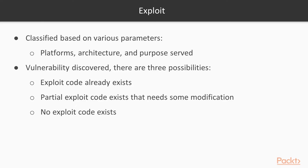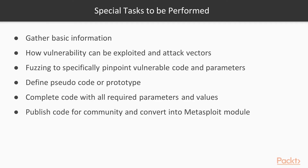Whenever any given vulnerability is discovered, there are either of three possibilities: an exploit code already exists, partial exploit code exists that needs some modification to execute a malicious payload, or no exploit code exists and there is a need to develop new exploit code from scratch. The first two cases look quite easy, as the exploit code exists and may need some minor tweaks. However, the third case — wherein a vulnerability has just been discovered and no exploit code exists — is the real challenge.